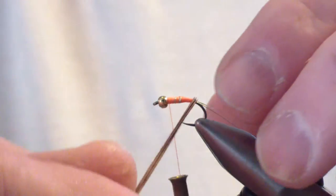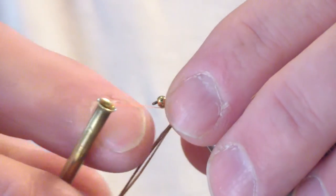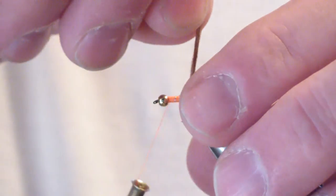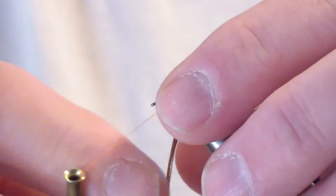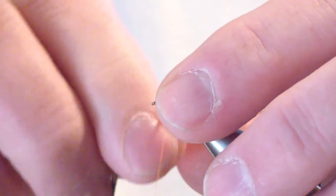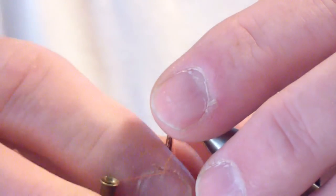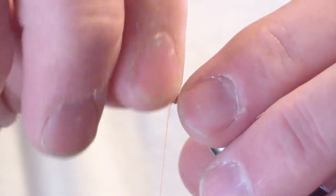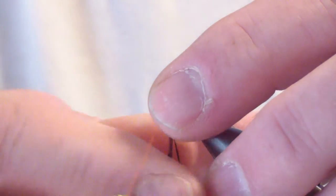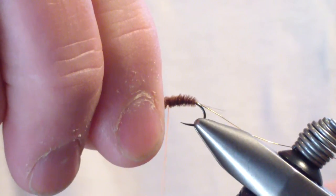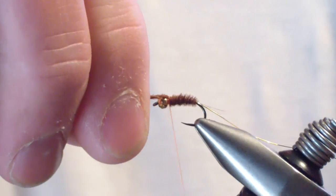Next we're going to wrap our pheasant tail. Bring it forward in an even taper. You don't have to build it up. It'll taper itself really. You've already provided the taper. And the material gets thicker as you go towards the base. So you're going to get a natural taper. And we're going to bring that all the way up to the bead. And tie it off.